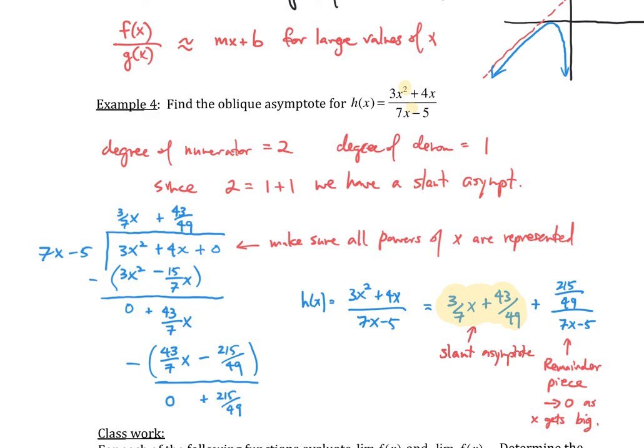So if you wanted to write your slant asymptote as an equation of a line, the slant asymptote is going to be y equal to 3 over 7x plus 43 over 49. And I'm going to highlight that because that is our final answer.